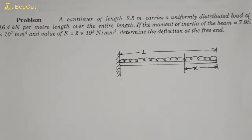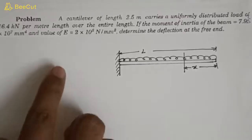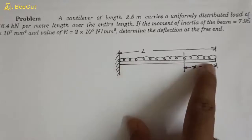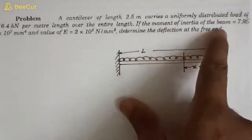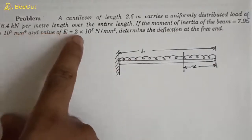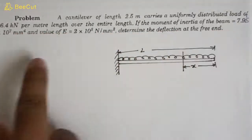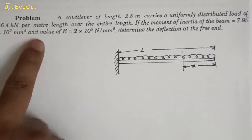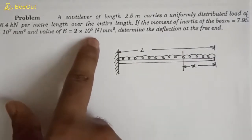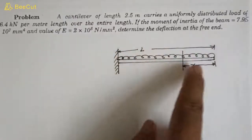Hello friends, you are welcome to my YouTube channel. In this video we will solve another problem on the deflection of beams. This is a cantilever beam of length 2.5 meters. It carries a uniformly distributed load of 16.4 kilonewton per meter over the entire length. The moment of inertia of the beam is 7.95 × 10⁷ mm⁴ and E is 2 × 10⁵ N/mm².